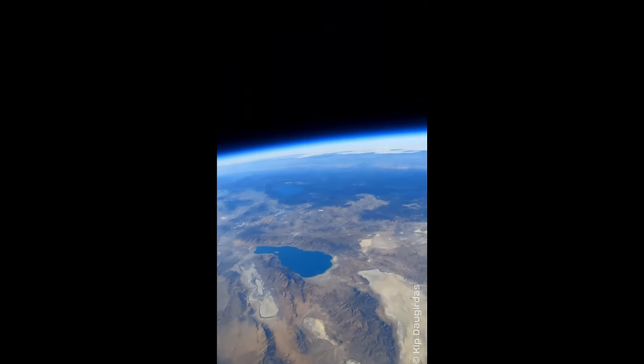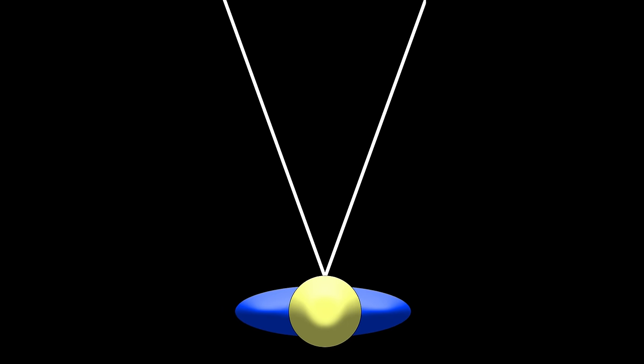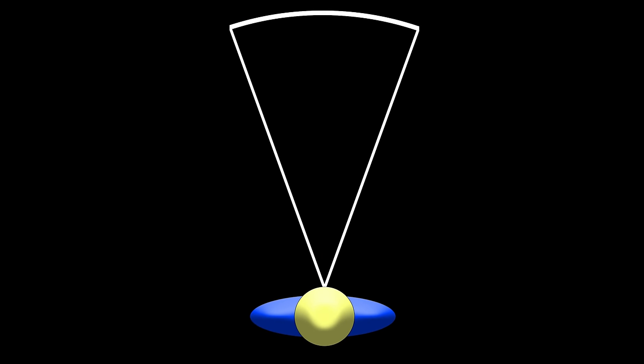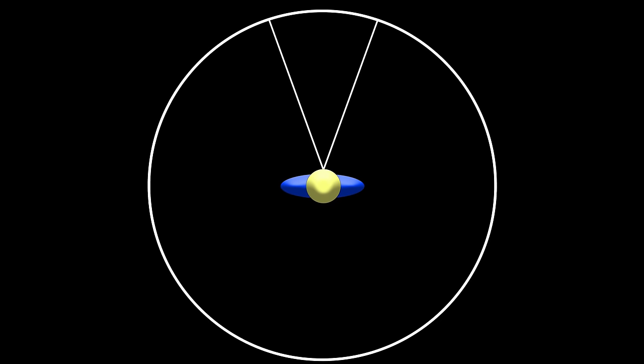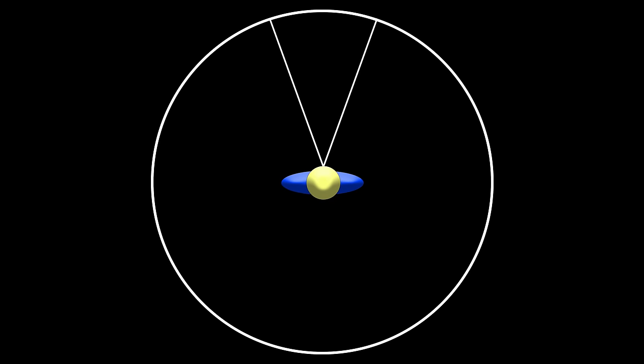If you're in a balloon and our vision range is 10 miles, it will be 10 miles in a full 360 degrees, which would still create a curved horizon line. The only way that the horizon would appear to stay perfectly flat, even from very high altitude, is if the earth were a shape that had a completely straight edge that we could actually see the edge of.